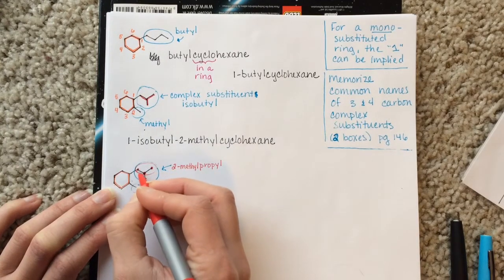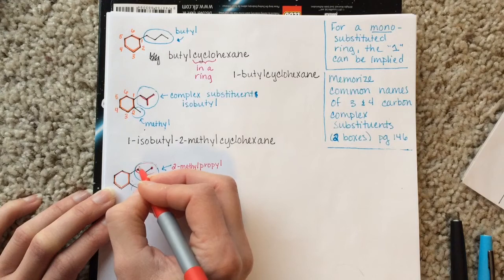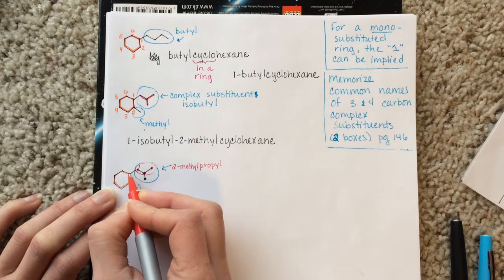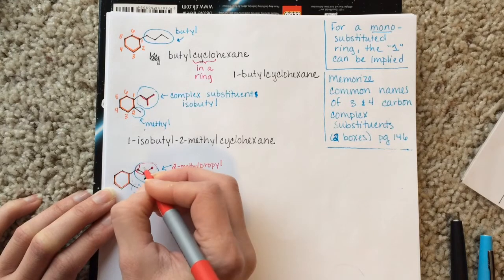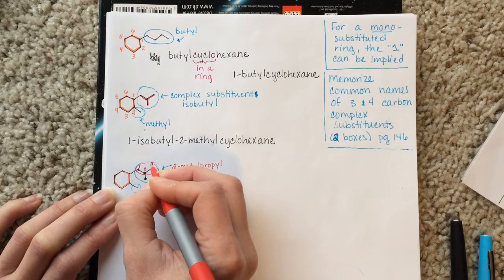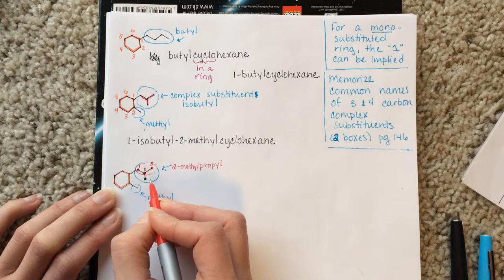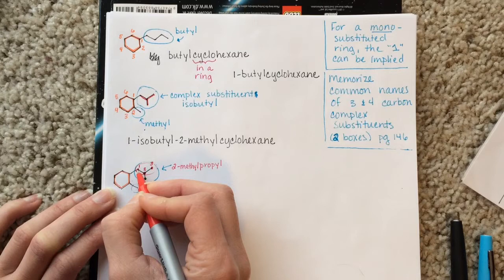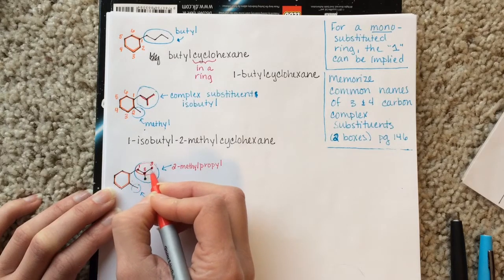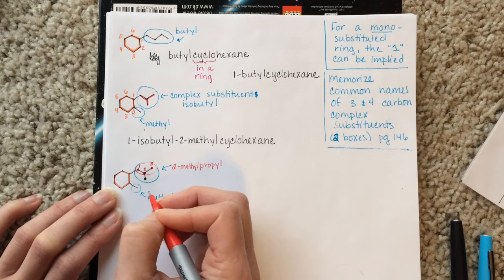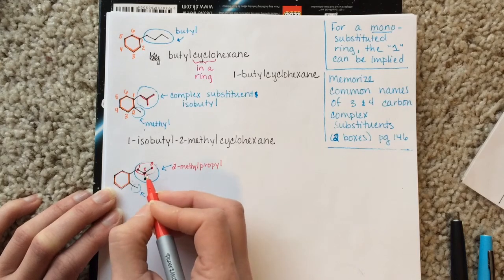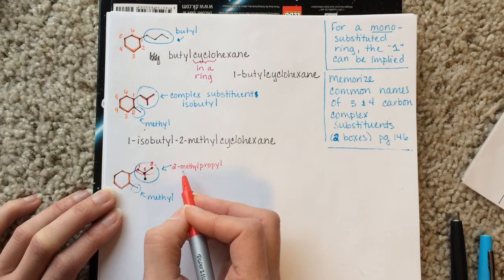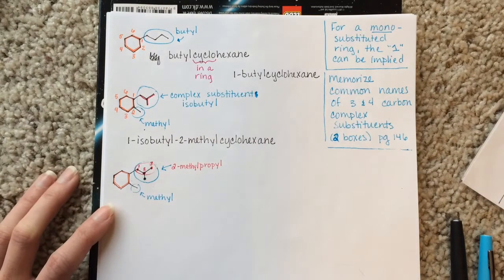And number two, when you're numbering a complex substituent, you always number starting at the atom that's attached to the parent chain and moving outward. So our objective here is not to put the methyl on the lowest possible number, but to number from the parent chain outward, just as convention. So those are the two ways that an IUPAC complex substituent name is different from just a regular IUPAC molecule's name.